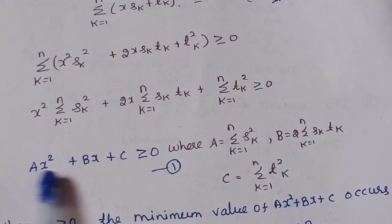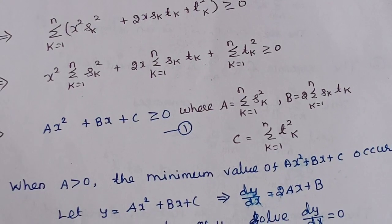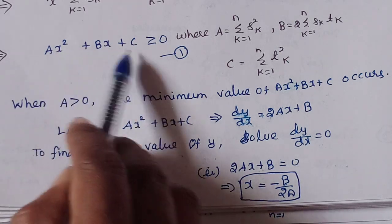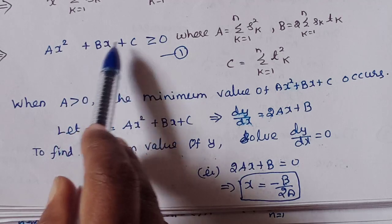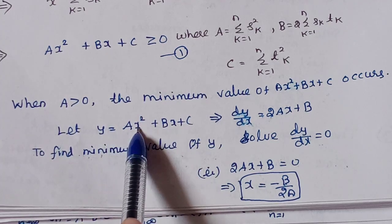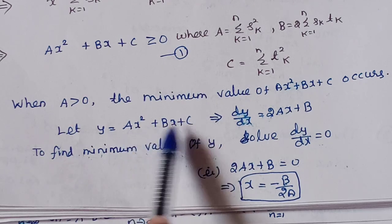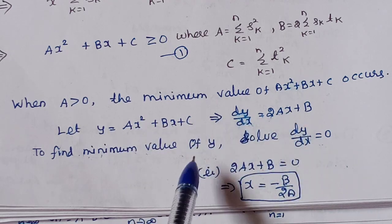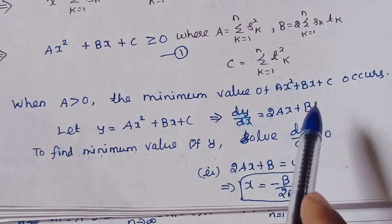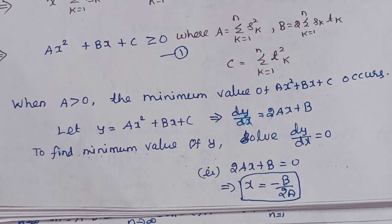Since A > 0, this is a quadratic polynomial. The minimum value of Ax² + Bx + C occurs when the first derivative equals 0. Setting dy/dx = 2Ax + B = 0 gives x = −B/(2A). Substituting x = −B/(2A) back into the inequality gives: A·(B²/4A²) − B·(B/2A) + C ≥ 0, which simplifies to B² − 4AC ≤ 0, or B² ≤ 4AC.